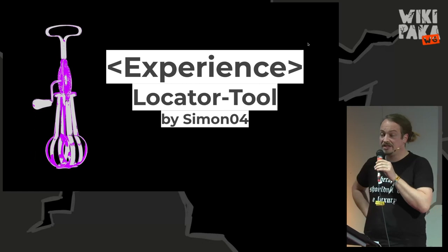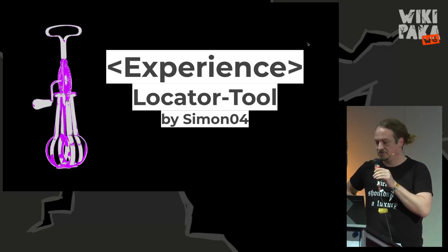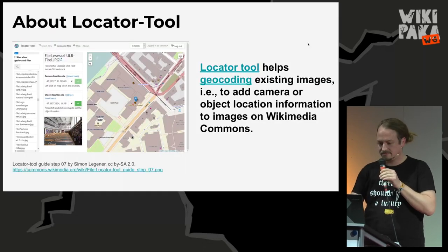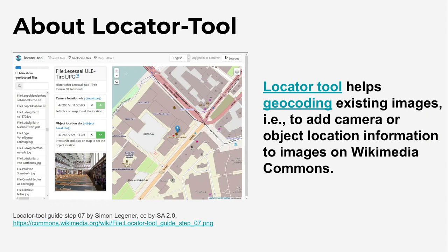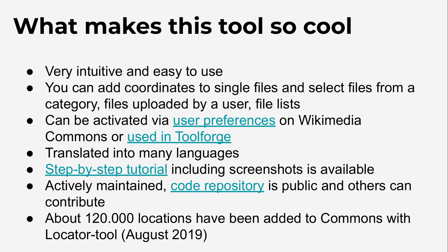So the first category was experience, and it was won by the Locator Tool by Simon04. It's a tool that helps you add geocoordinates — the exact position — to existing images, especially on Wikimedia Commons, which is the place to share free media: images, videos, things like this. It received this prize because it's really intuitive and easy to use. You can add coordinates to one or more files, you can find it in user preferences so it's a bit easier to discover, it's available in many languages, it has great tutorials, it's actively maintained, and it's been used a lot.